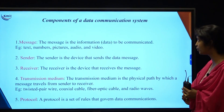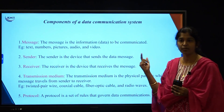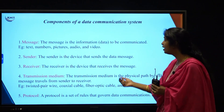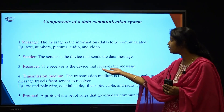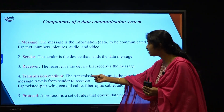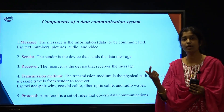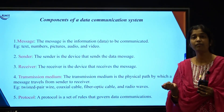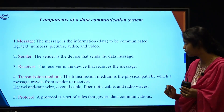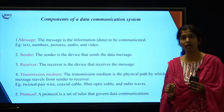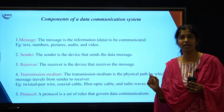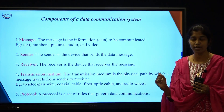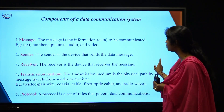The message is the data that we are communicating — it could be a text, audio, or video message. The sender is a device that is sending the data message. The receiver is a device that is receiving the message. Transmission media is the physical path through which we are doing the communication — examples include twisted pair cable, fiber optic cable, or unguided transmission media. The protocol is defined as a set of rules that govern the communication process, ensuring both parties follow the same rules.